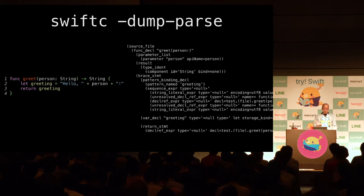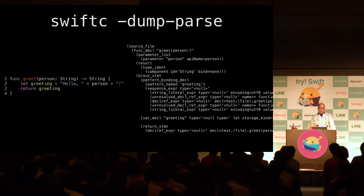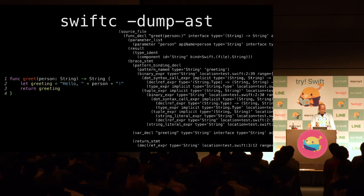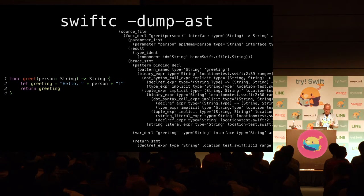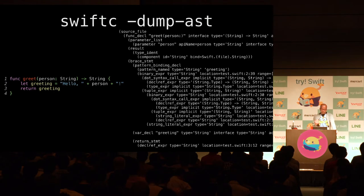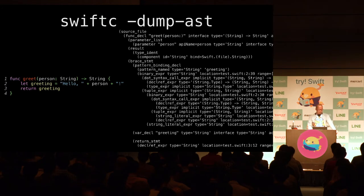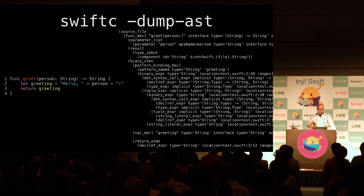Passing the dump-parse option to the swiftc command will display a string representation of the AST used by the Swift compiler. This is an output of passing the dump-AST option to the swiftc command. It is very similar to the dump-parse option, but this one contains a lot more information because the dump-AST output is generated in a later compiler phase than dump-parse.